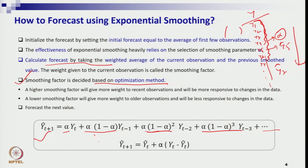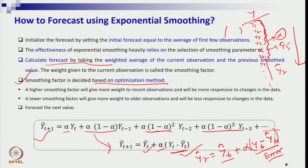This iterative formula can also be written as a weighted sum: alpha times actual plus (1 minus alpha) times the forecast. So y7 forecast equals alpha times y6 actual plus (1 minus alpha) times y6 hat. This is the weighted combination of the previous period actual and forecast. This formula is easier to understand and remember, and I will use it in the Excel illustration. Both formulations are equivalent.